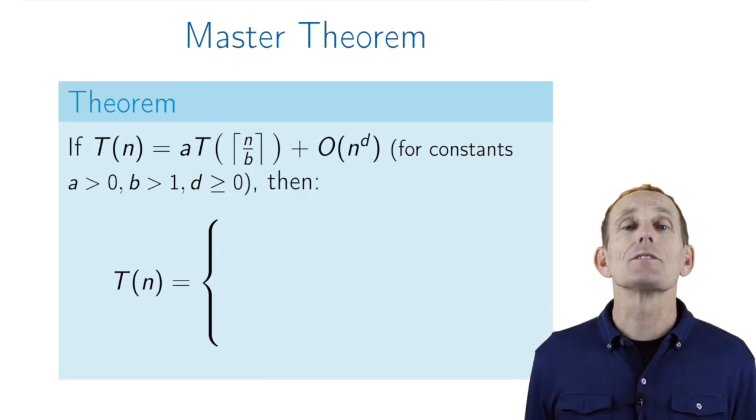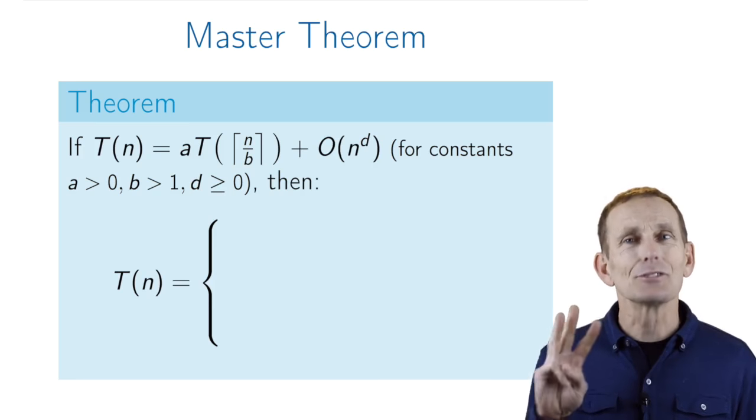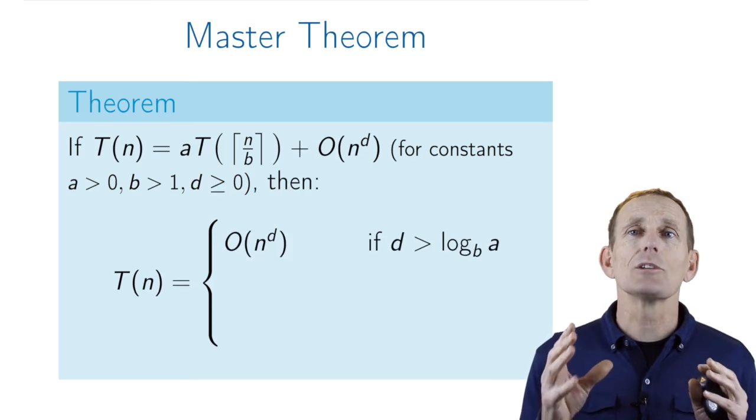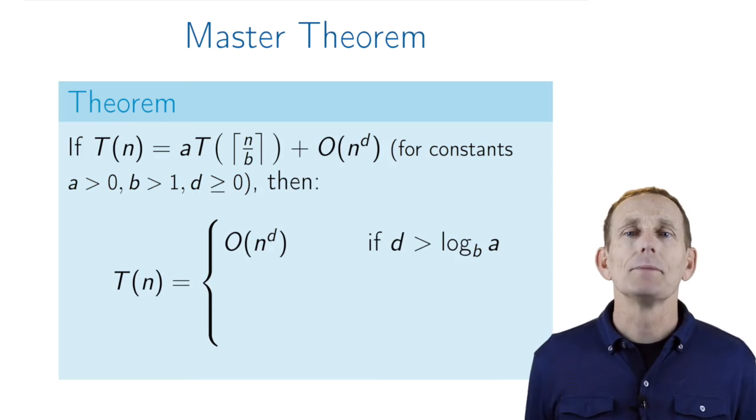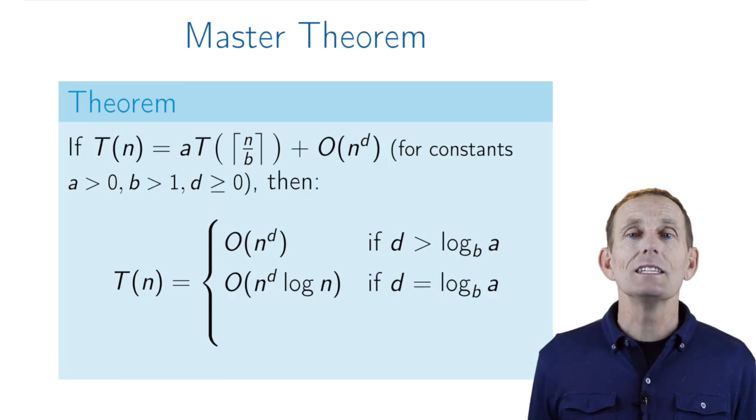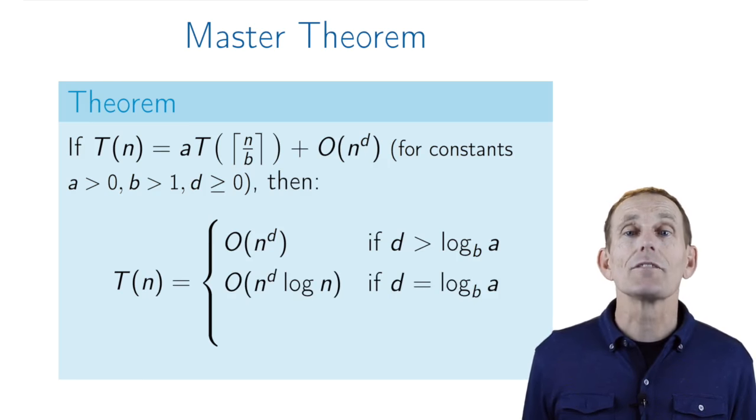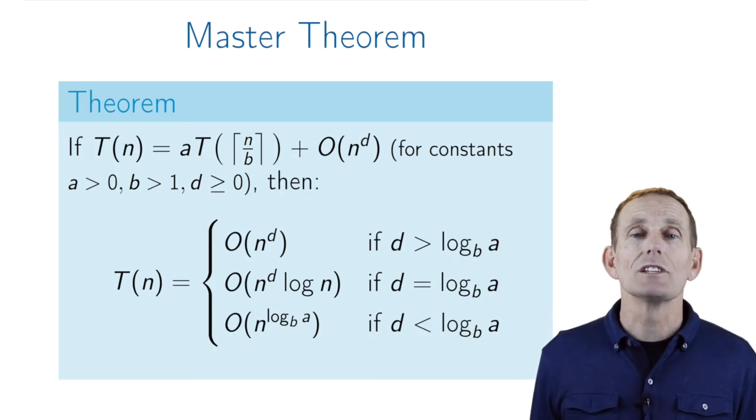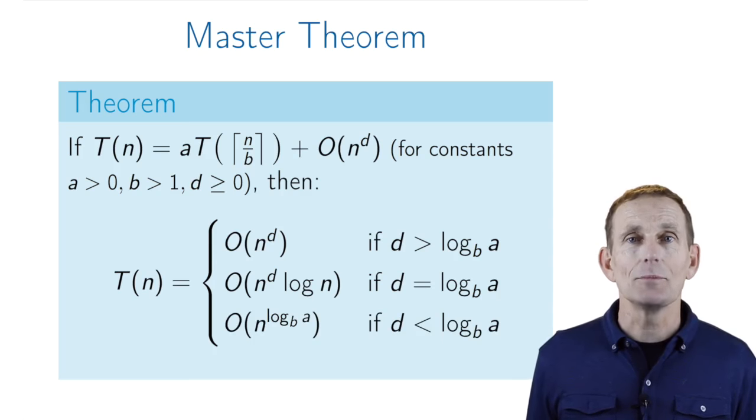Well, in that case, we have a solution for T(n). There are three subcases. Case number one, and all these cases depend on the relationship between d, a, and b. In particular, is d greater than log base b of a? If so, the solution is just this polynomial in n, big O of n to the d. If d is exactly equal log base b of a, then the solution is big O of n to the d with an extra factor of log n. And finally, if d is less than log base b of a, then this solution is big O of n to the log base b of a.